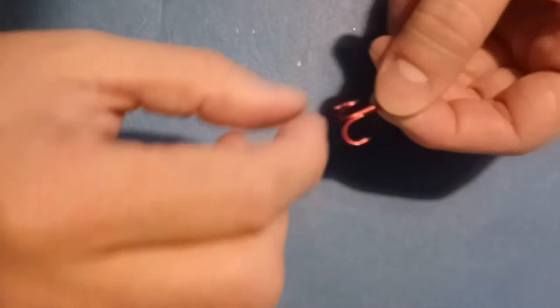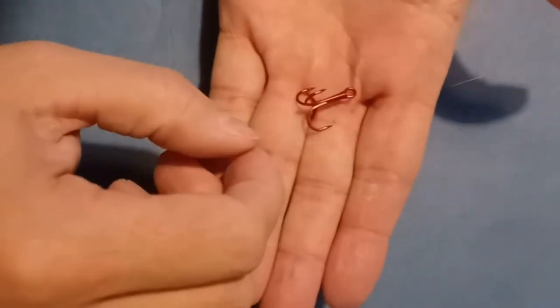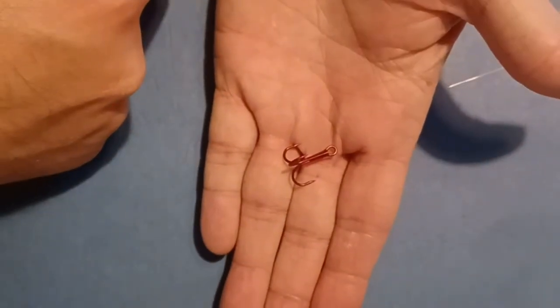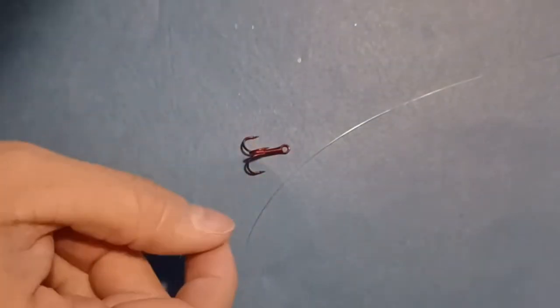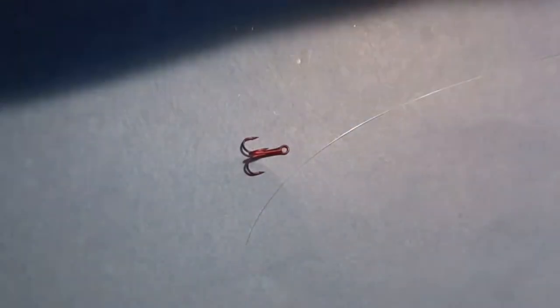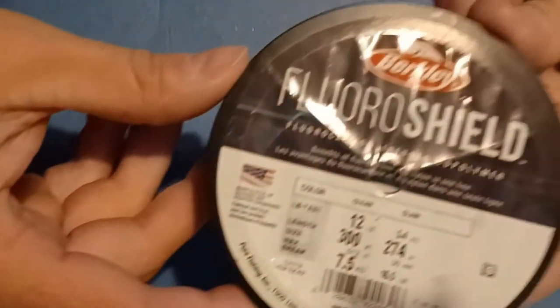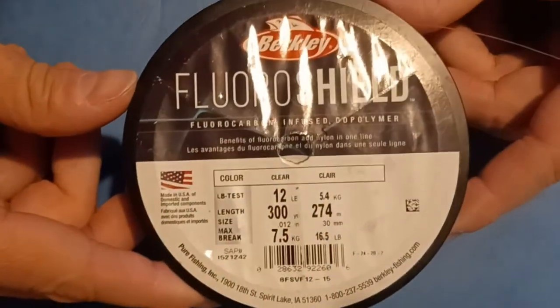So the treble that I use is typically an 8 to 10 size. In this case it was a size 6 just because that's all I could find. And then the line that I use is anywhere from 8 to 12 pound test fluorocarbon. In this case I have a 12 pound test.